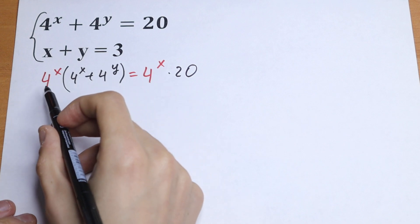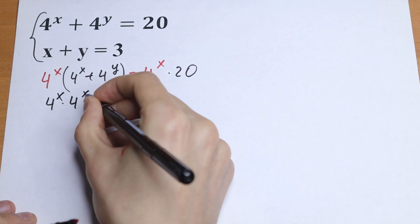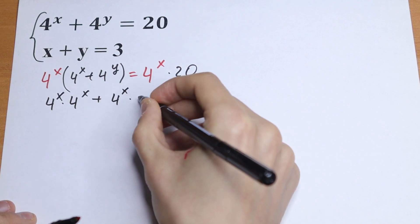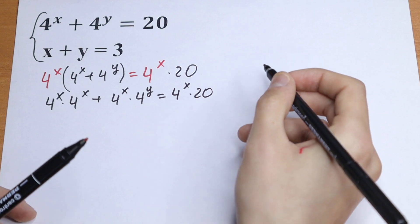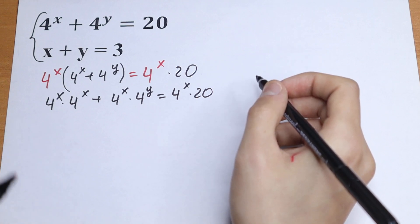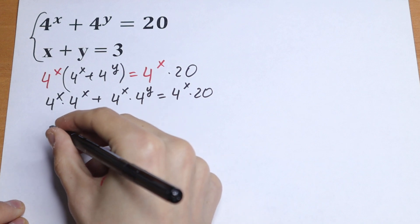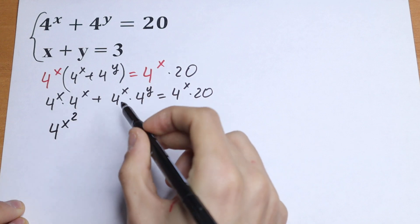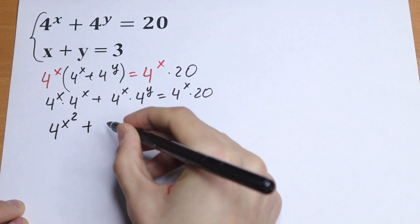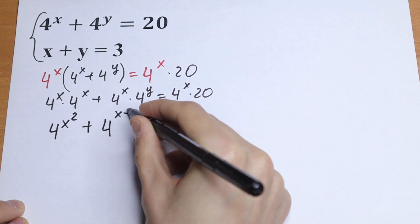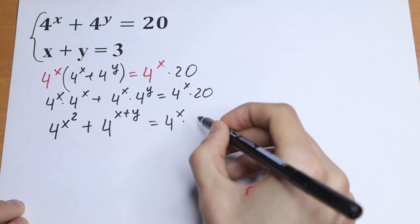Let's open these parentheses. We will have 4 to the power x times 4 to the power x, plus 4 to the power x times 4 to the power y, equal to 4 to the power x times 20. Right here we have 4 to the power x squared. We can add the exponents because we have the same base, so we write it as plus 4 to the power x plus y, and on the right, 4 to the power x times 20.